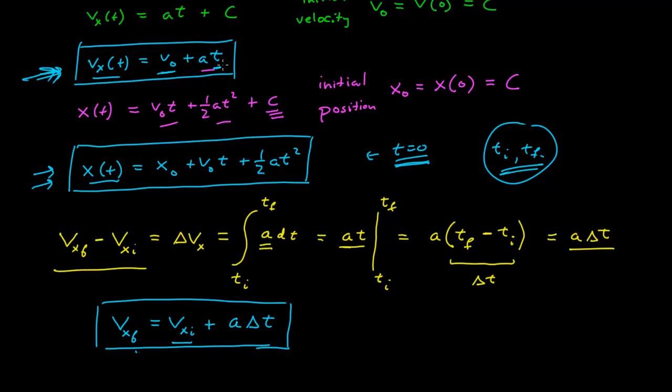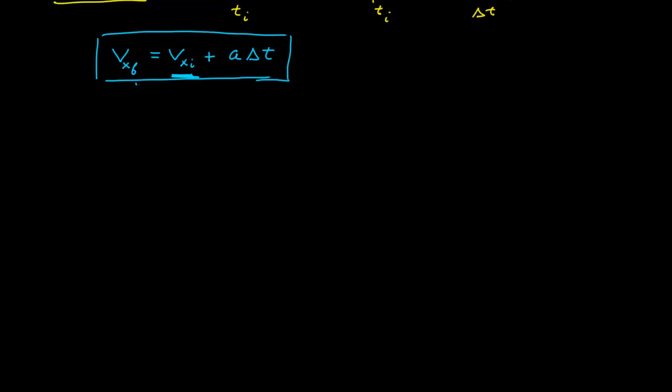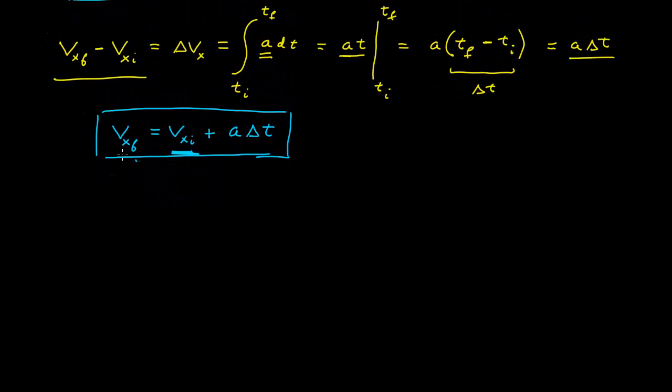But note that if the initial is not necessarily at t equals zero, v zero here is defined here for time equals zero. So this initial time here could be something else. And so that's why we're doing this, so we can look for differences between initial times and final times that aren't necessarily t equals zero.